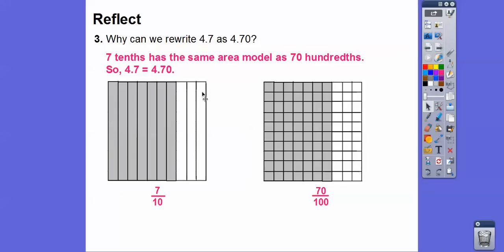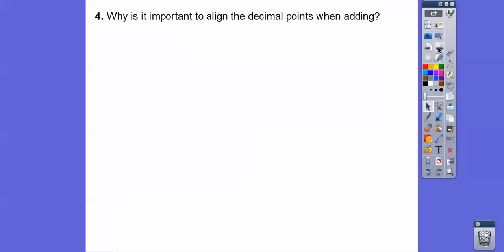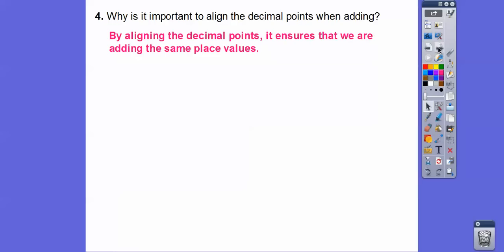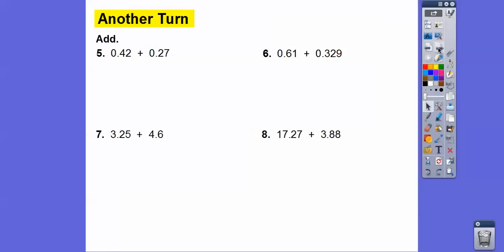Why can we write 4.7 as 4.70? Here's 7 tenths, and here's 70 hundredths — they represent the same shaded area. 7 tenths has the same area as 70 hundredths, so 4.7 is the same as 4.70. And by aligning the decimal points, it ensures that we're adding the same place values.